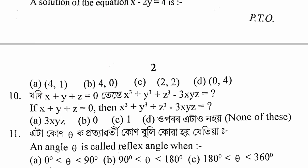The question was: if x plus y plus z equals 0, then x cubed plus y cubed plus z cubed minus 3xyz equals what. The answer is b: 0. The reason is that x cubed plus y cubed plus z cubed minus 3xyz equals (x plus y plus z) times (x squared plus y squared plus z squared minus xy minus yz minus zx). Since x plus y plus z equals 0, the whole expression becomes 0.